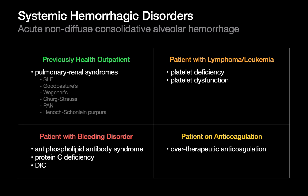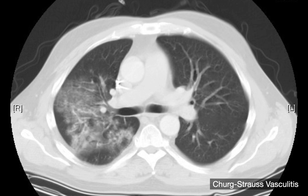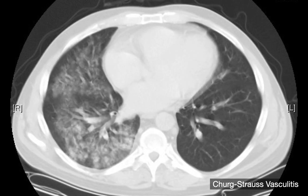The first of three subtypes of alveolar hemorrhage to remember is systemic hemorrhagic disorder playing out in the lungs. Think about which category of patient you're dealing with: a previously healthy outpatient where a pulmonary-renal syndrome may be presenting for the first time; a patient with lymphoma or leukemia where platelet dyscrasia is the concern; a patient with a known bleeding disorder; or a patient on anticoagulation who may be supratherapeutic.